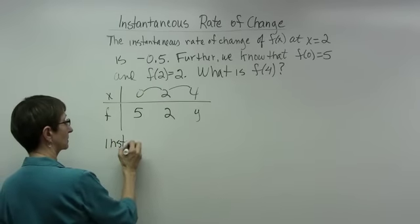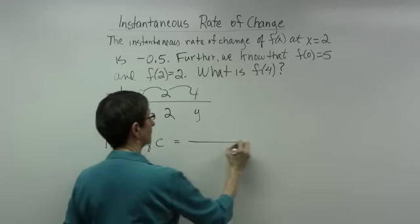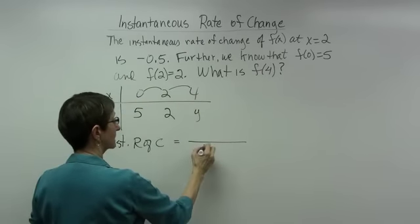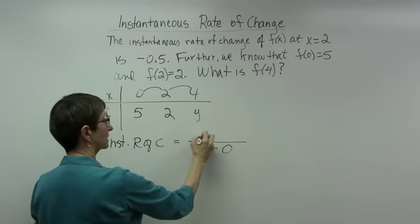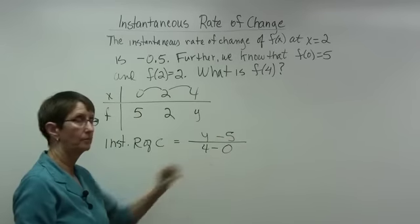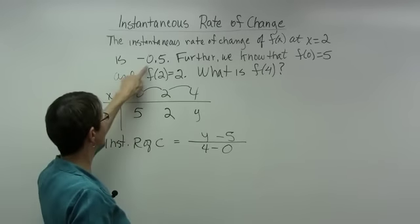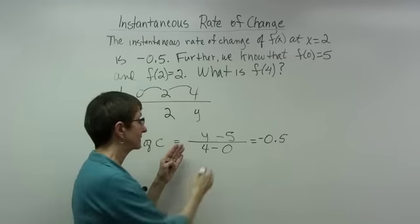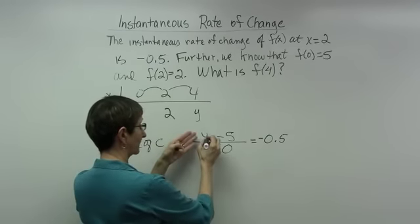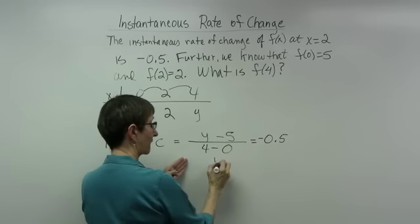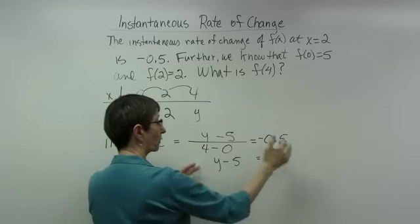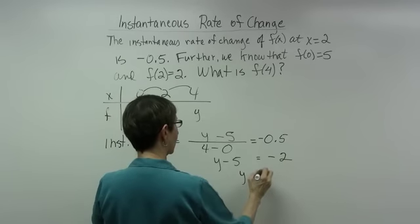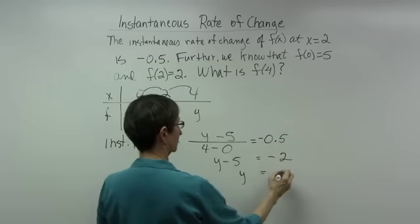The instantaneous rate of change will use the two y's equally spaced around x equal to 2. In the denominator I have 4 minus 0, and in the numerator y minus 5. I know the instantaneous rate of change is negative 0.5, so I set the fraction equal to negative 0.5. Multiplying across: y minus 5 equals 4 times negative 0.5, which is negative 2. So y equals negative 2 plus 5, which is 3.